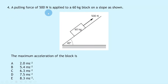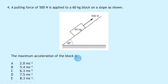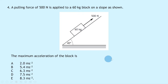Question 4 says a pulling force of 500 newtons is applied to a 60 kg block on a slope at an angle of 40 degrees. The maximum acceleration of the block is? This involves a few parts: we have the pulling force but we need to find the frictional force acting back down the slope before we can find the unbalanced force and hence the acceleration.